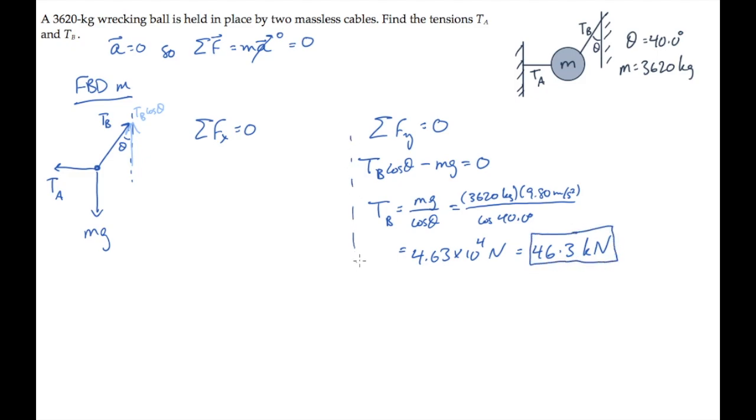Now looking at the horizontal or x components, we see that tension b has component Tb sine theta, because it's opposite the angle theta.